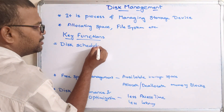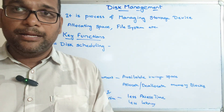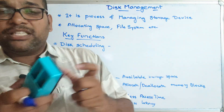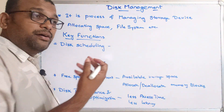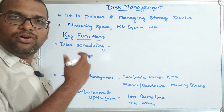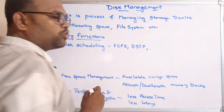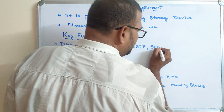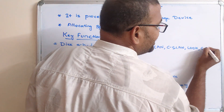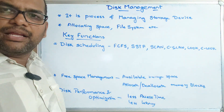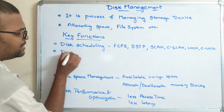The next function is disk scheduling. Whenever we want to access files from the disk, requests are processed based on access time and different constraints. We studied different algorithms to process requests on the disk: FCFS (First Come First Serve), SSTF (Shortest Seek Time First), SCAN, C-SCAN, LOOK, and C-LOOK (Circular LOOK). These are different scheduling algorithms used to process disk requests.